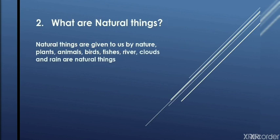What are natural things? Natural things are given to us by nature, like plants, animals, birds, fishes, rivers, clouds, and rain. All these things are given to us by mother nature.